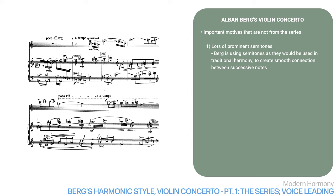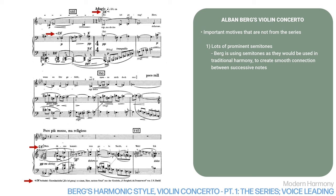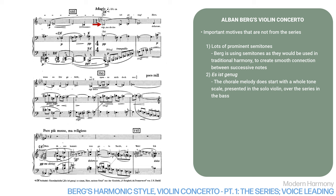Now let's move ahead to much later in the piece. In the last section of the second movement, Berg quotes a Bach chorale, 'Es ist genug.' How does this chorale relate to the overall language of the concerto? Well, the chorale melody does start with a whole-tone scale, presented the first time in measure 136 and following, in the solo violin over the series in the bass. But then, starting in measure 142, we hear the chorale in Bach's original harmonization in the woodwinds, while the violin comments with occasional bits of a whole-tone scale.